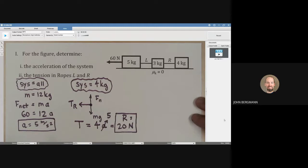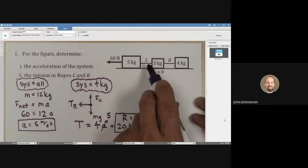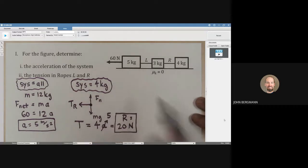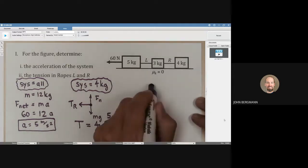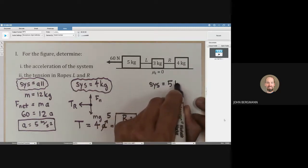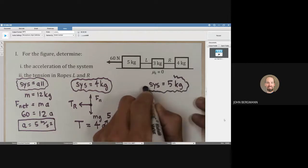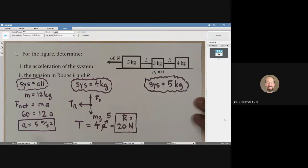Got it. Well, then what? Any number of things you could do. We need to now find the tension on the left. Let's choose the system to be the 5 kilogram mass. If the system is the 5 kilogram mass now, you see how we're just selectively saying, you know what, for this part, let's make the system this. What would a free-body diagram of the 5 kilogram mass look like?